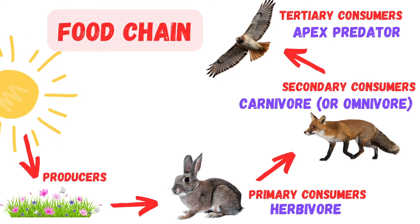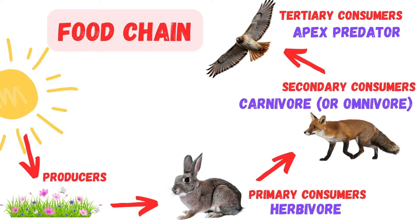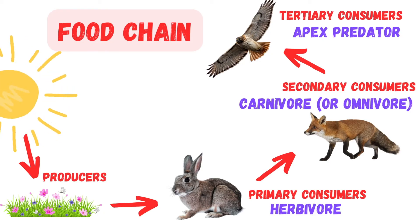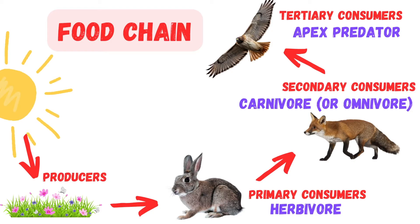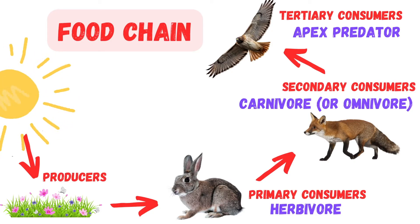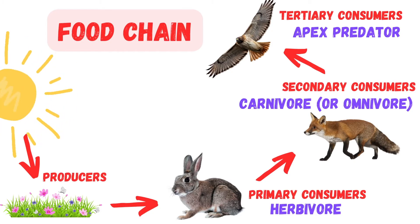So far, we've seen how energy flows through a simple food chain — from the sun, to the grass, to the rabbit, to the fox, and finally to the hawk. But in nature, things are rarely this straightforward. Animals don't just rely on one food source, and plants don't only feed one kind of animal. This is where a food web comes in.